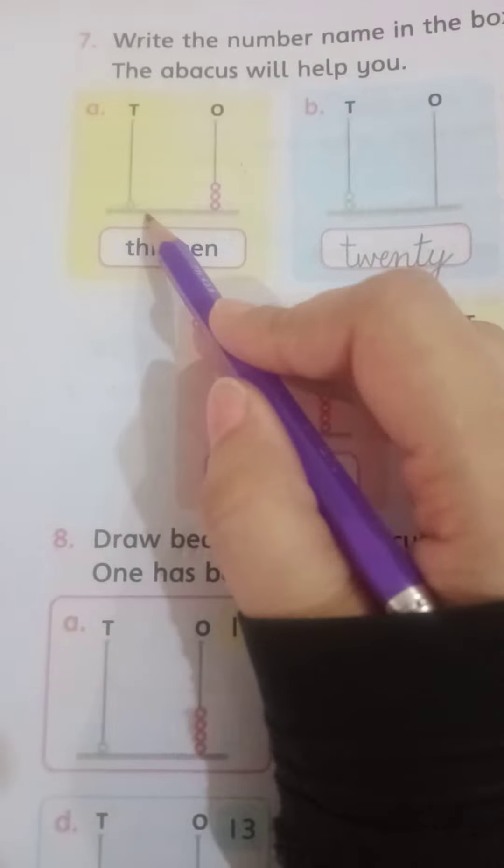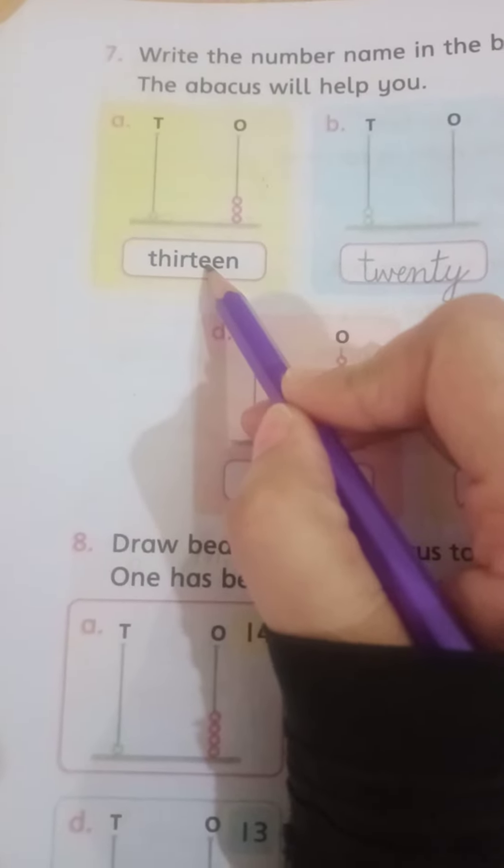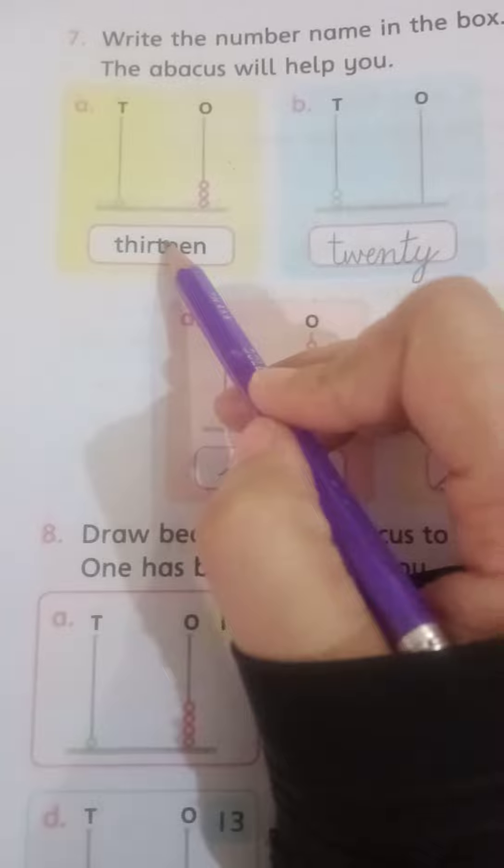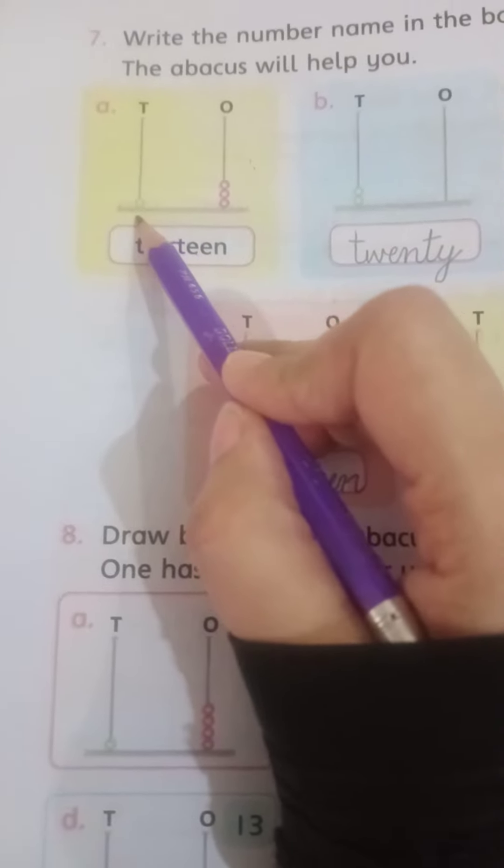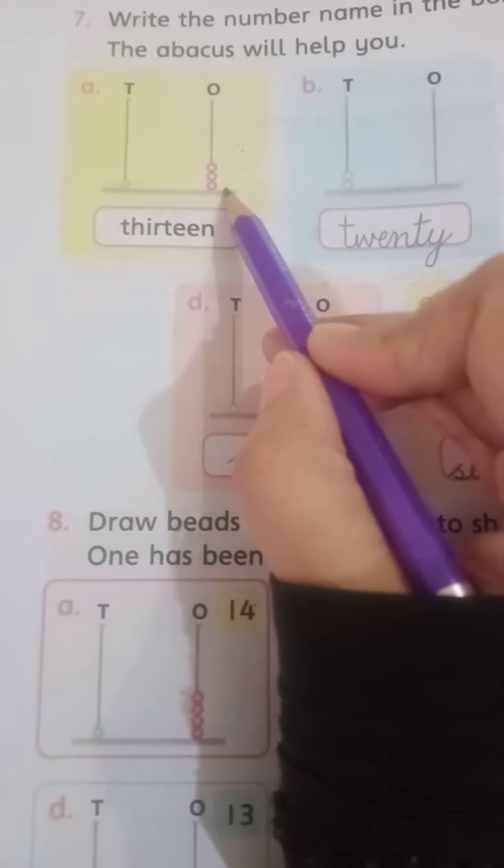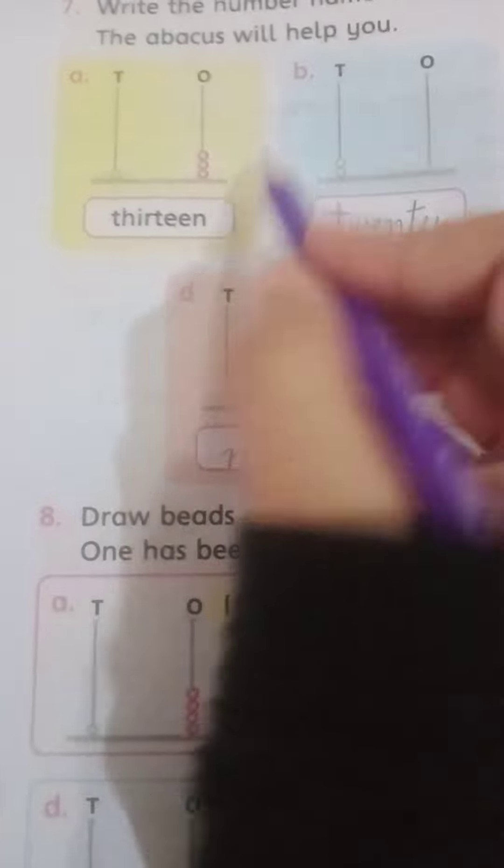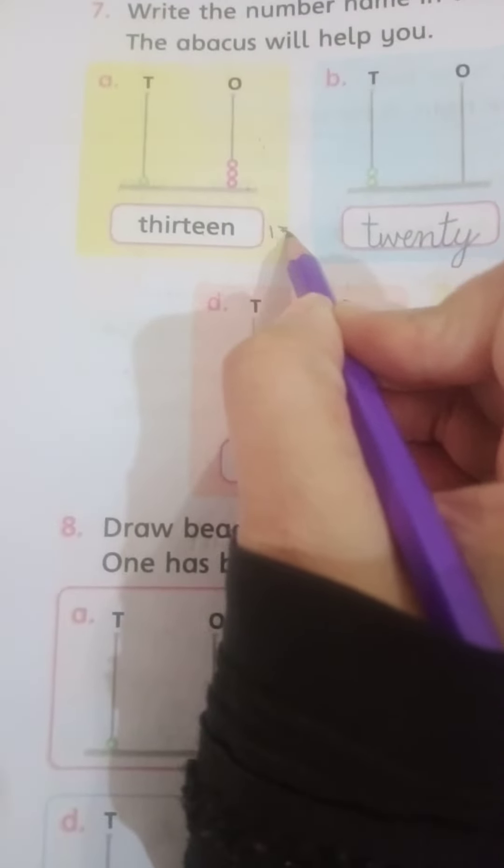Isi tarah yahan pe likha hua hai thirteen. Aapne thirteen kis tarah se banana hai, dekhe tens mein one circle hai, or ones mein three circles hain, toh mila ke kya banayega: one, three, thirteen.